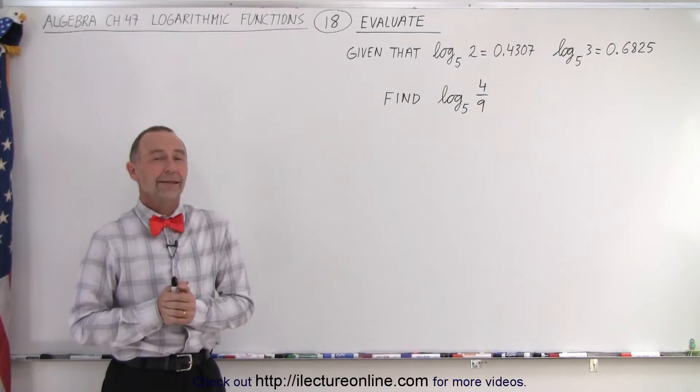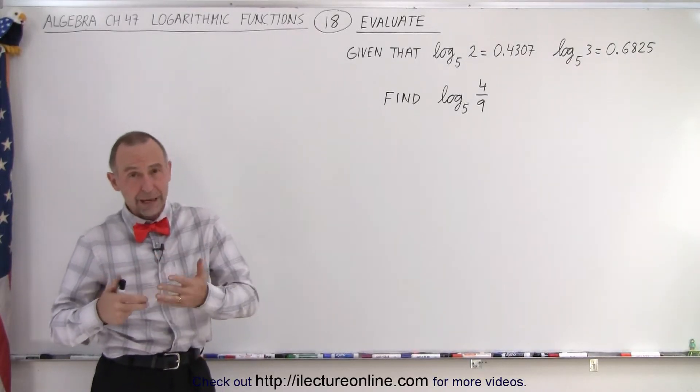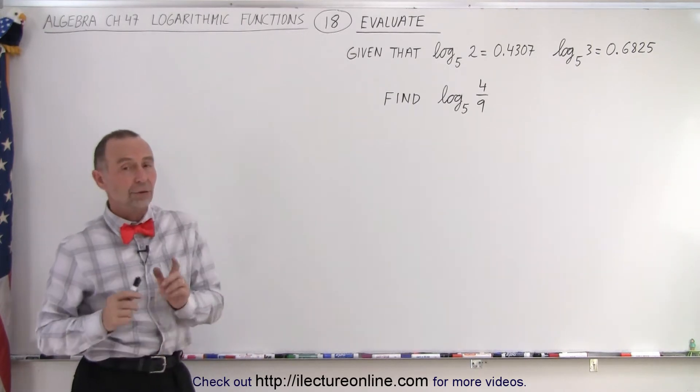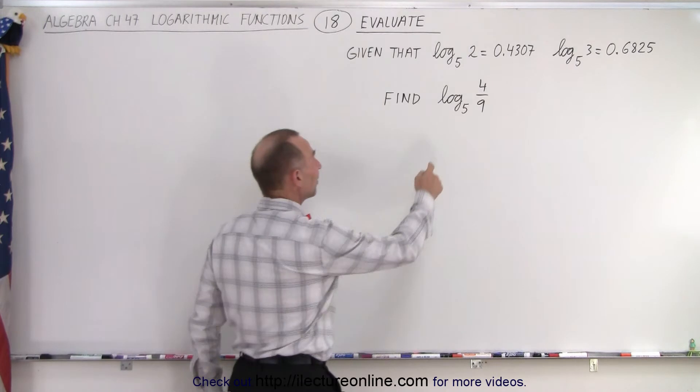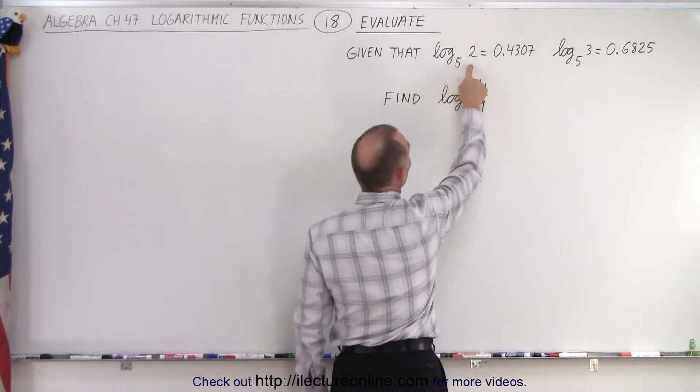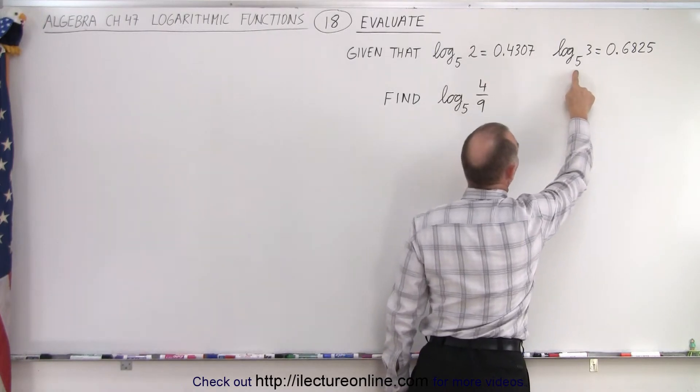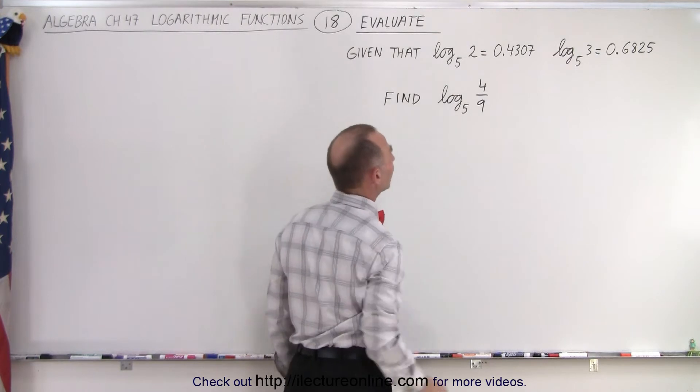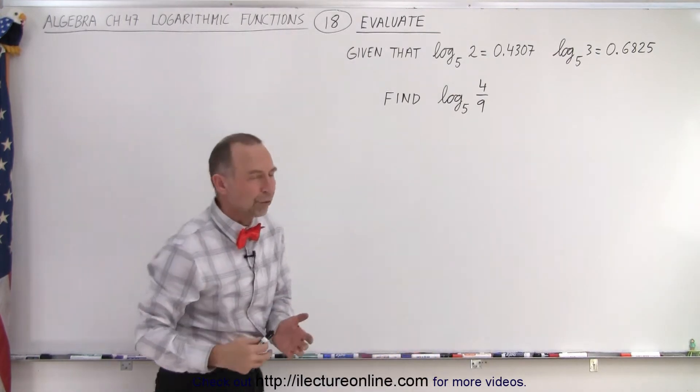Welcome to our lecture online. Now that we know the rules, the three main rules of logarithms, we're ready to solve something like this. Notice we have the logarithm base 5, and we're given that the logarithm base 5 of 2 is equal to 0.4307, and the logarithm base 5 of 3 is equal to 0.6825. And now they want us to evaluate the log base 5 of 4 over 9.